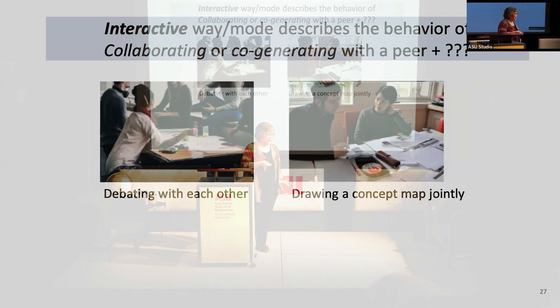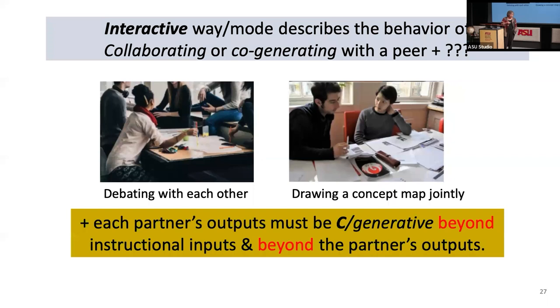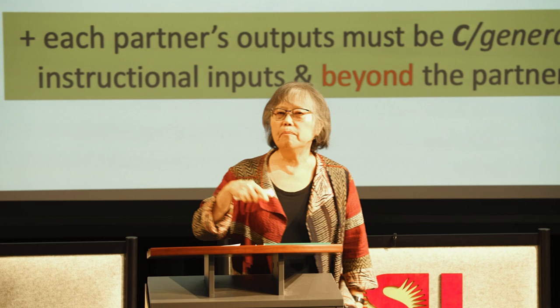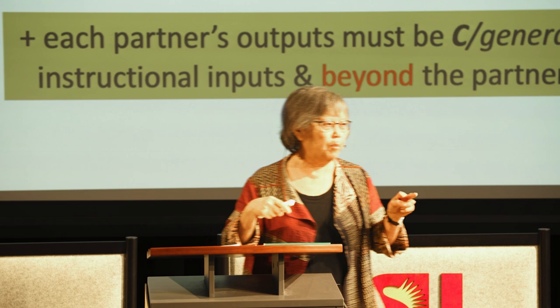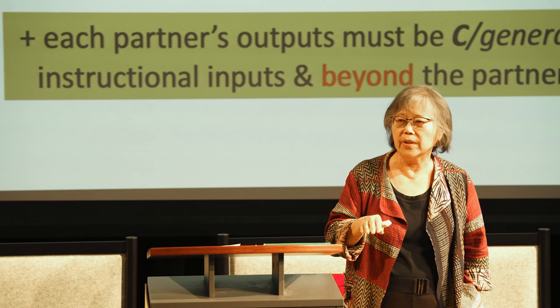The Interactive mode describes the behavior of two peers collaborating such that each peer's output goes beyond what they already said or what the material already showed — so each peer is constructive. In addition, each peer must be generative above what their partner mentions. It's doubly beyond: beyond yourself, beyond the text, and beyond the partner.